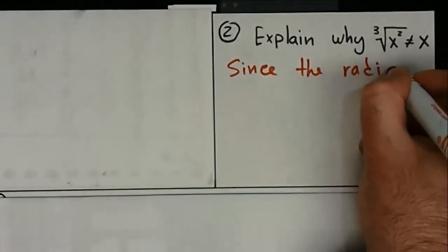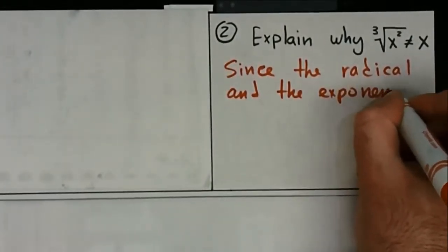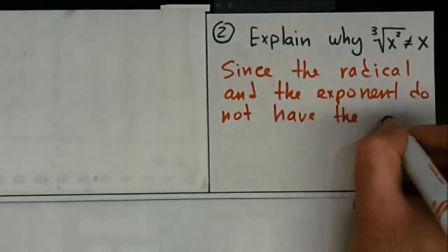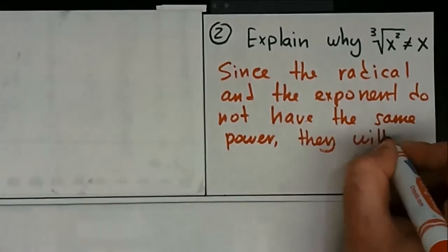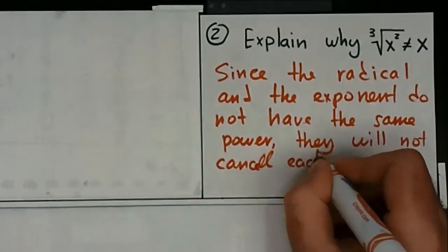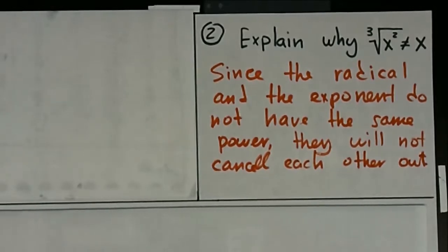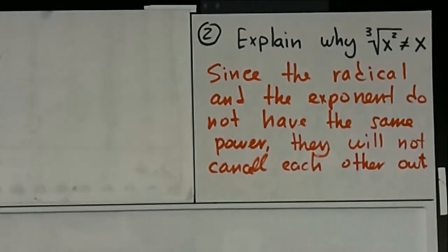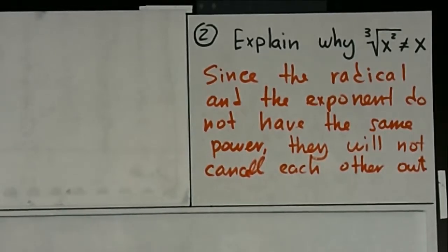The explanation is: since the radical and the exponent do not have the same power, they will not cancel each other out. So that's the explanation for number two. Again, if they have the same power they cancel; if they don't have the same power they're not matching, they're not opposites, they don't cancel each other out. It's kind of like saying negative three plus two is zero — no, negative two plus two is zero, but negative three plus two is not zero because they don't cancel each other out, they're not opposites.